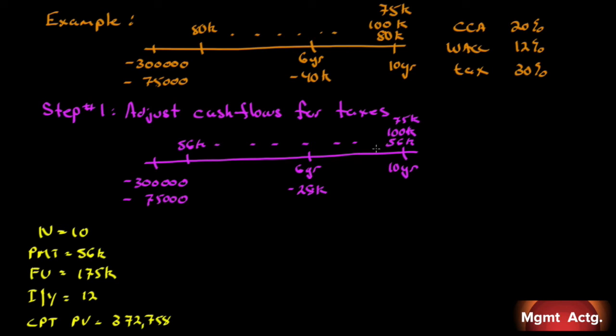We have this pesky $28,000 thing sitting out in year six. Let's take the present value of that six-year cash flow. It'll be 28k divided by 1.12 to the 6. Since this is negative 28, we get negative $14,186.